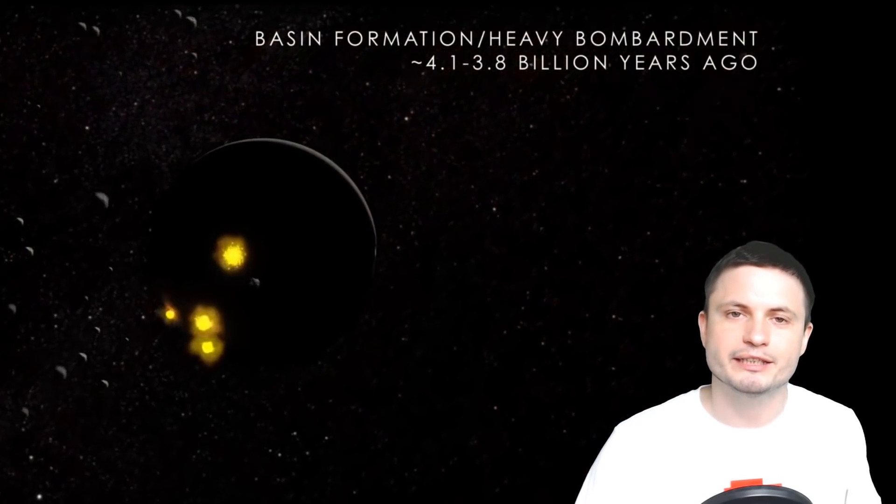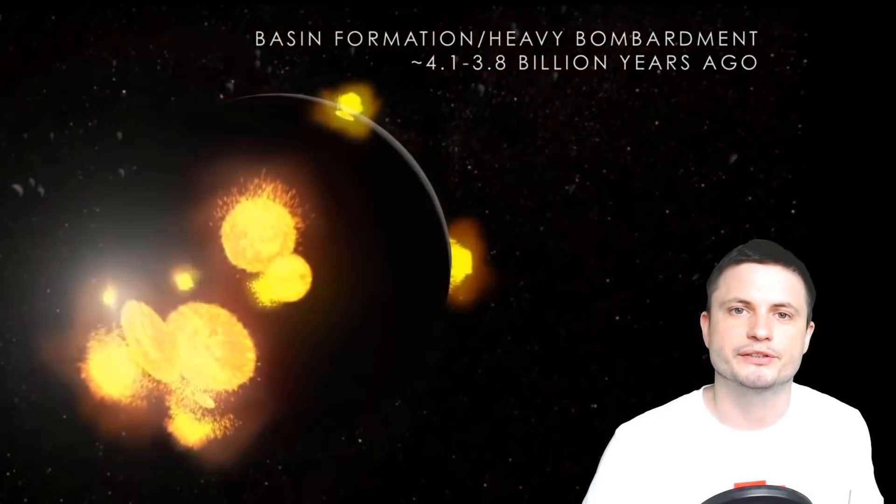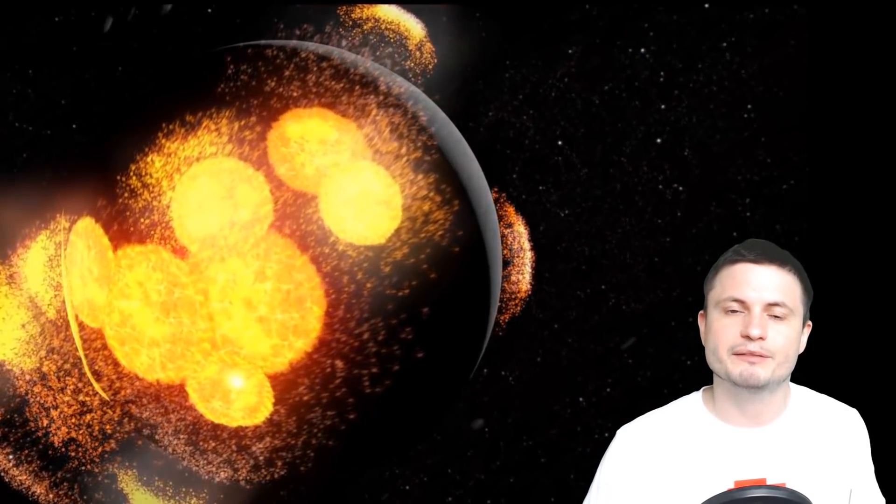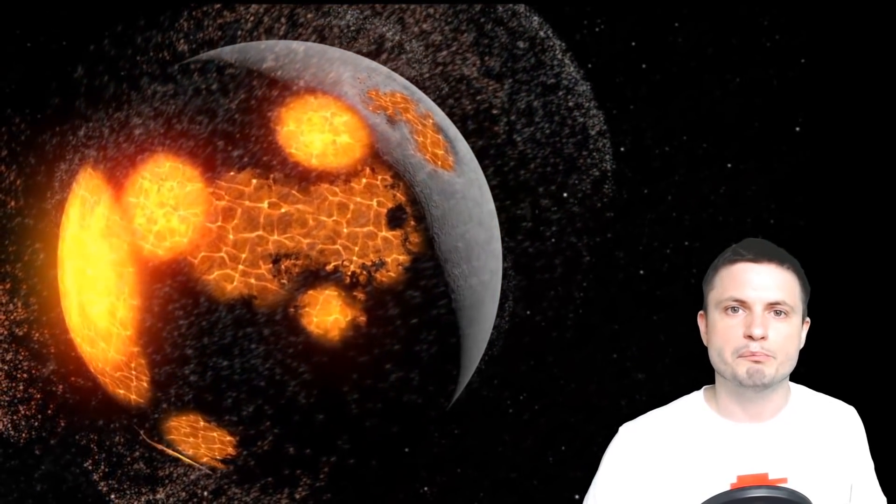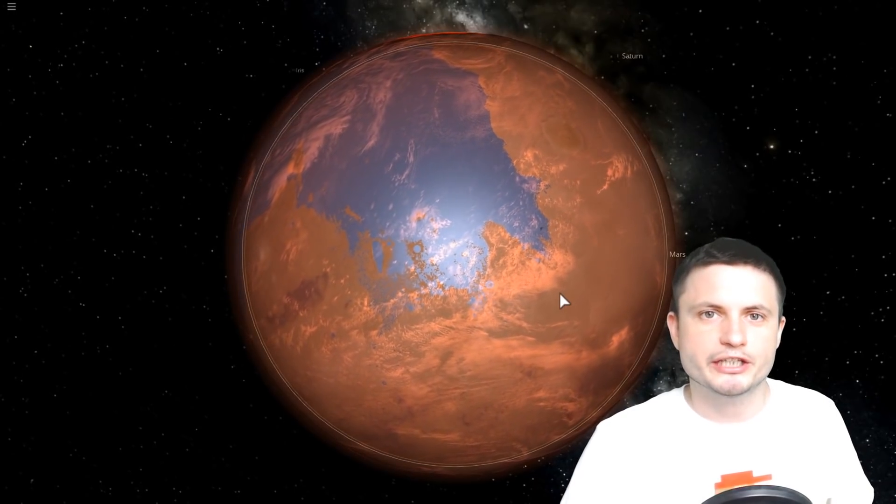We don't really know why, but we believe that because of this, Mars may have had stable conditions with a lot of liquid water on the surface much longer than we previously believed, which obviously suggests that there is a very high chance of Mars having established oceans and atmosphere much earlier than we previously thought.